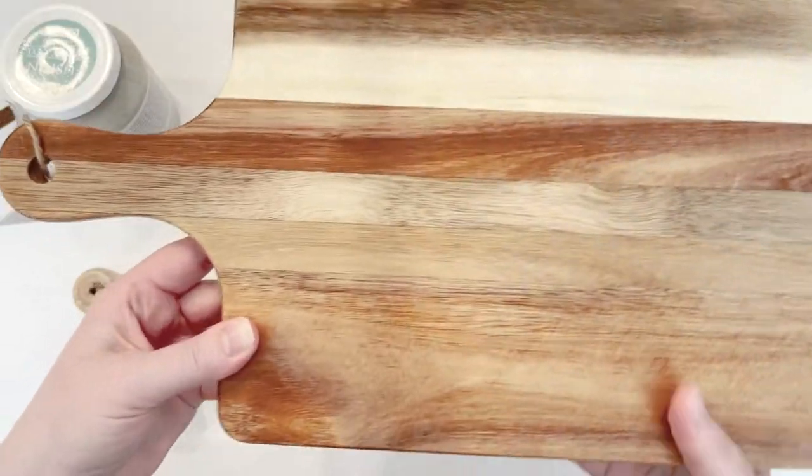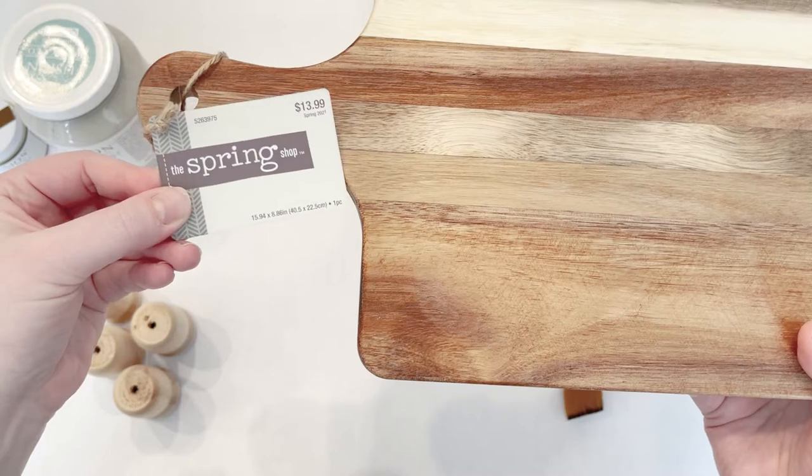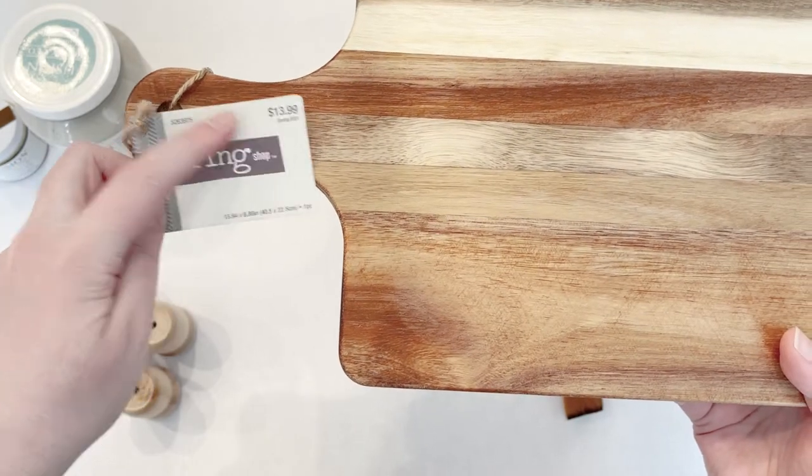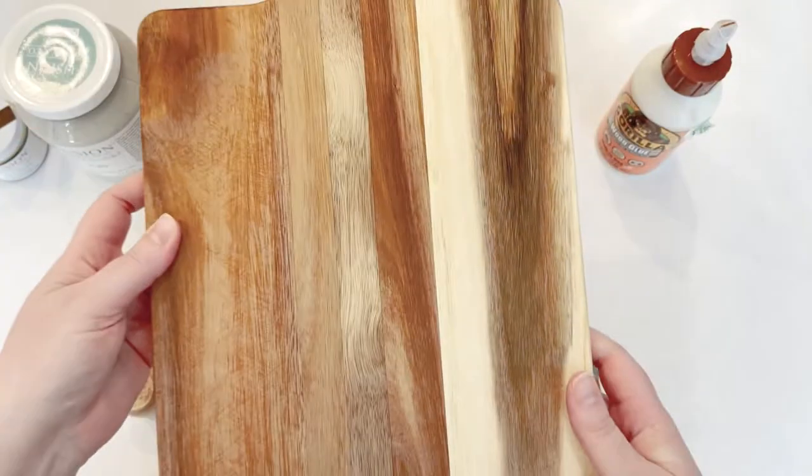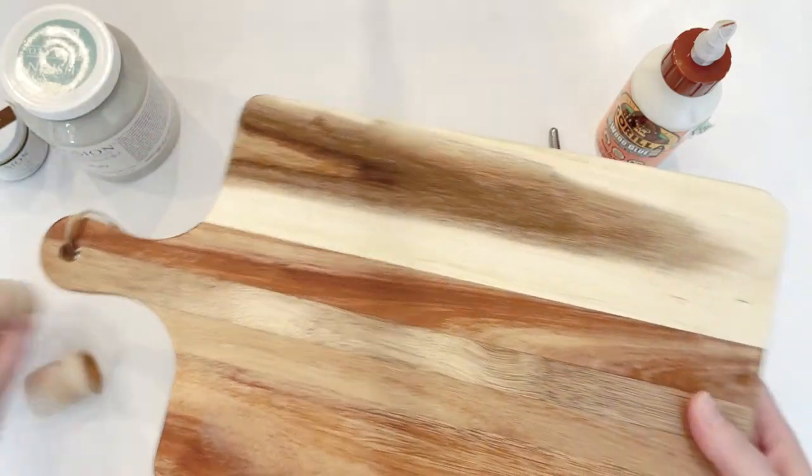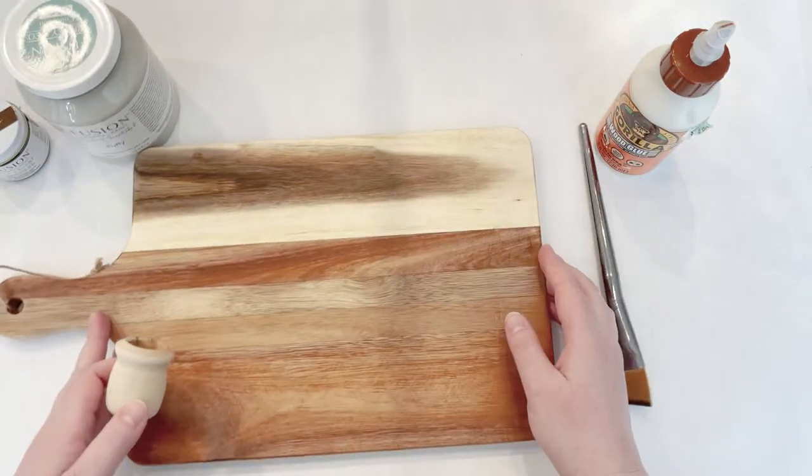And then of course you're going to need a cutting board. I picked this up at Hobby Lobby. It's part of their spring line, so it was 40% off. I think it was $6.99 at checkout. So that's all we need to make this project.